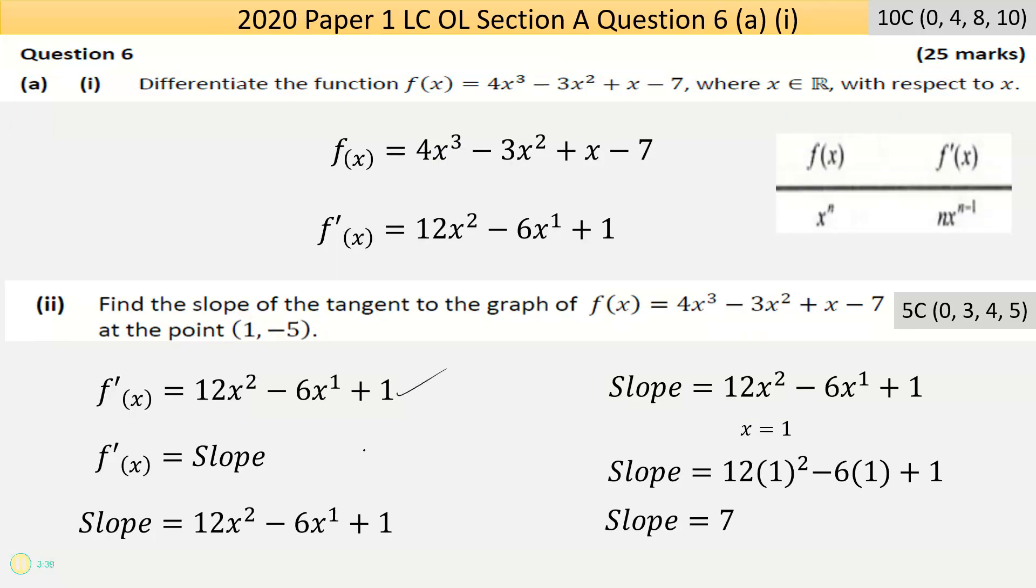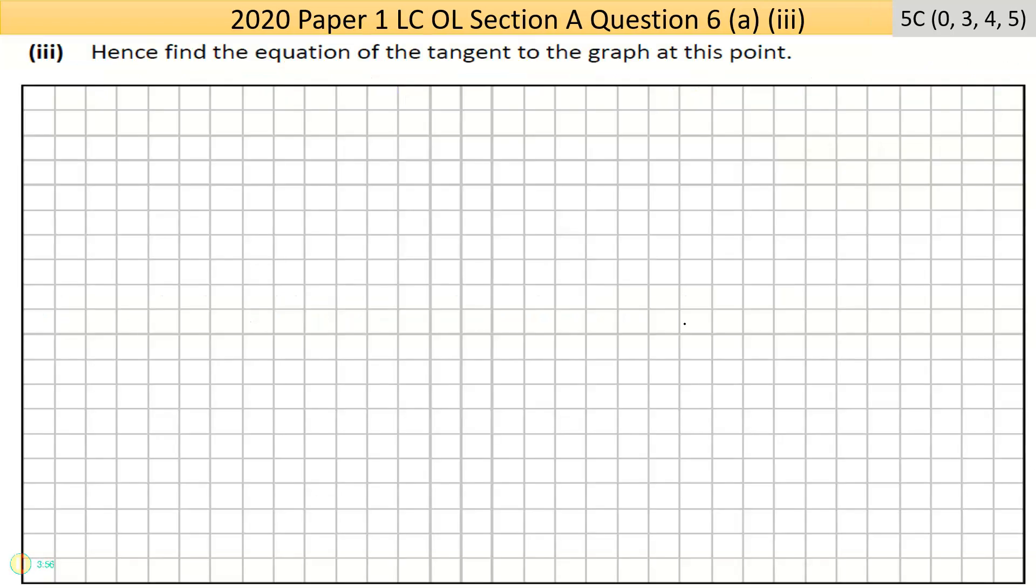On the next page I have the answers done out. That's the derivative - the derivative is the slope. I'm finding the slope at the x value I was given. Substitute it in, I've done it here, put it in the calculator, I've got 7.